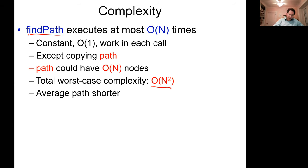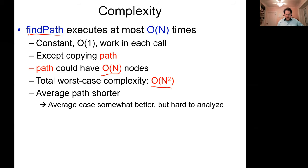How often are you going to get a path that is N nodes long? The average path will be somewhat shorter, but it's more complicated to analyze. The average case may be a bit better than this worst case, but we already know enough to say it's not a very fast algorithm.